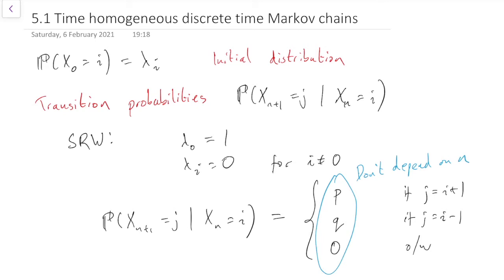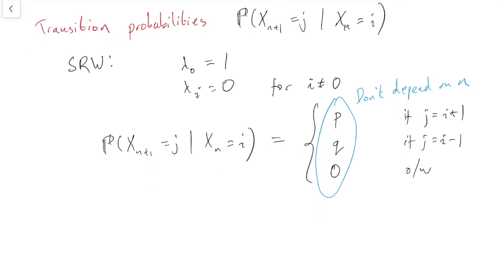The probability that we move up 1 or move down 1 is p or q, and they're fixed for all time. And that is called being time-homogeneous. Time-homogeneous means the probability of making any given move is the same at whatever time it happens.